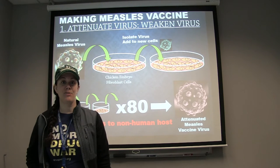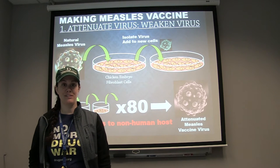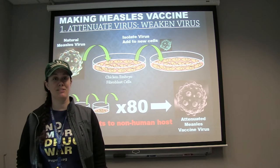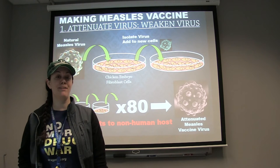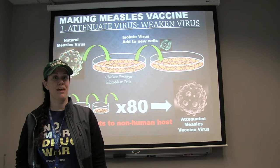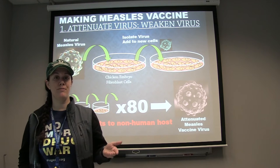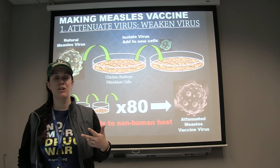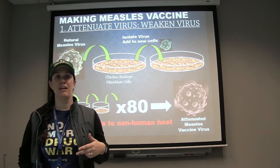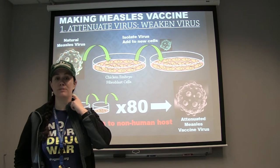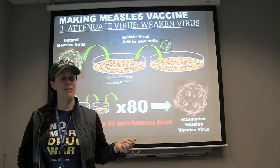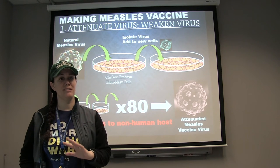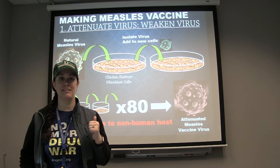Now we're going to talk about the process of attenuation — how we weaken viruses for attenuated vaccines. We're going to mostly talk about measles as an example. Just know that all the vaccine viruses in the MMR vaccine — that's mumps, rubella, and measles — are all attenuated viruses. The flu shot, by contrast, is an inactivated virus vaccine, which is a very different process with very different ingredients.